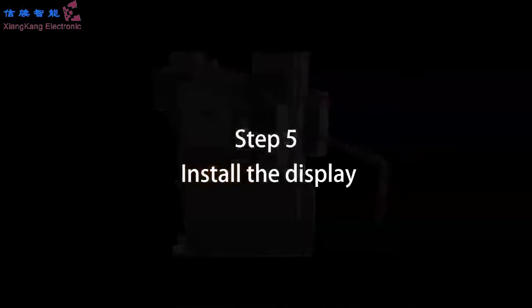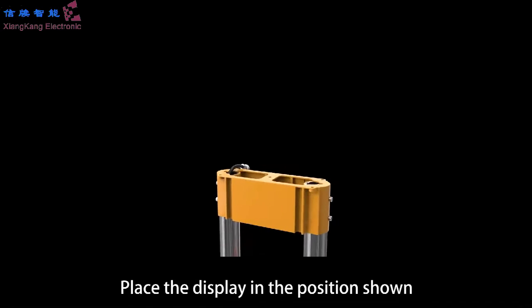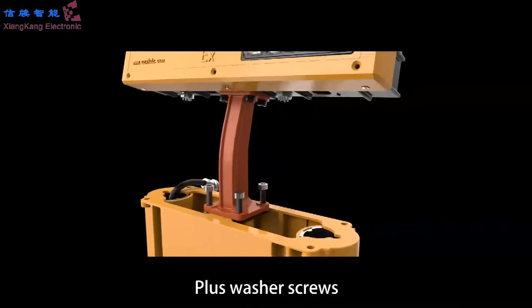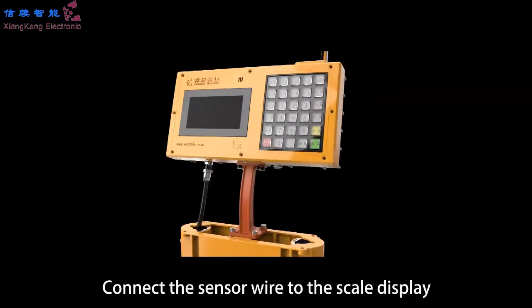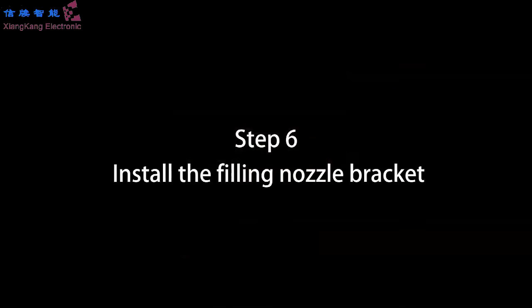Step 5: Install the display. Place the display in the position shown. Put a gasket, plus washer screws. Connect the sensor wire to the scale display.